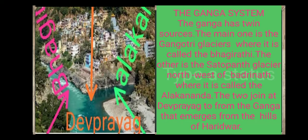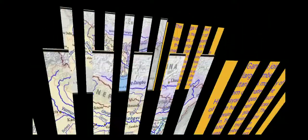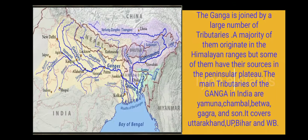Devprayag is located in Uttarakhand. The Ganga is joined by a large number of tributaries. A majority of them originate in the Himalayan ranges, but some have their source in the Peninsular Plateau. The main tributaries of the Ganga in India are Yamuna, Chambal, Betwa, Ghaghra, and Son.